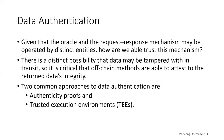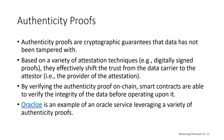Authenticity proofs are cryptographic guarantees that data has not been tampered with, based on a variety of attestation techniques such as digitally signed proofs. They effectively shift trust from the data carrier to the attester — the provider of the attestation. By verifying the authenticity proof on-chain, smart contracts are able to verify the integrity of the data before operating on it. Oracleize is an example of an oracle service leveraging a variety of authenticity proofs. One such proof currently available for data queries from the Ethereum main network is the TLS notary proof.